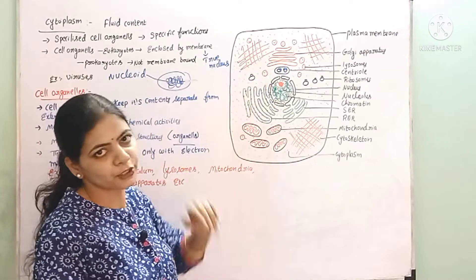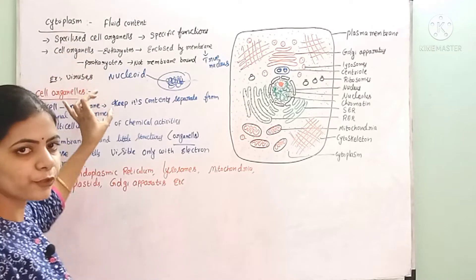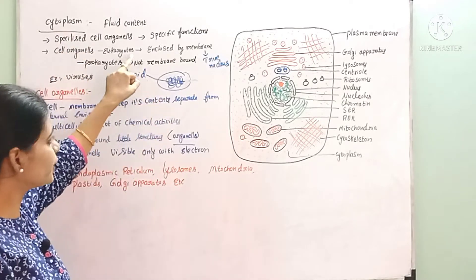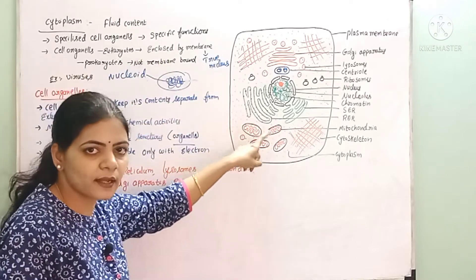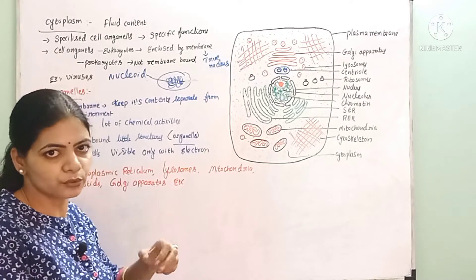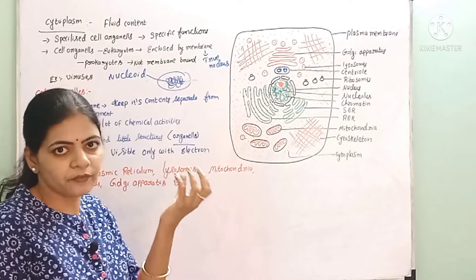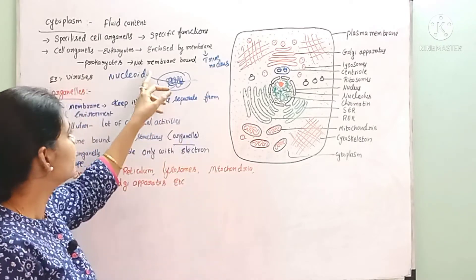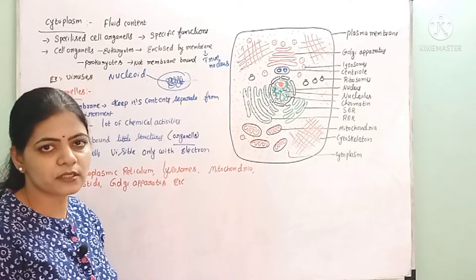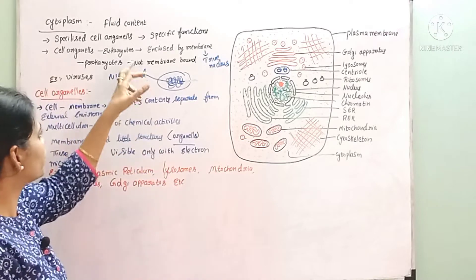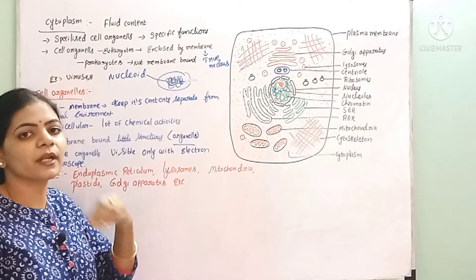We have fluid content and cell organelles. There is a difference between eukaryotes and prokaryotes. In eukaryotes, the cell organelles are membrane-bound. In prokaryotes, there are no membrane-bound cell organelles — that is the major difference between prokaryotes and eukaryotes.